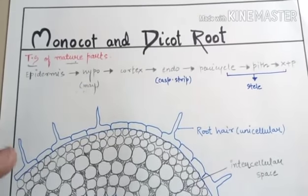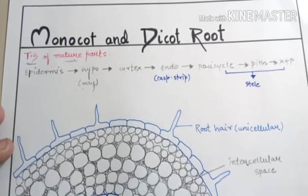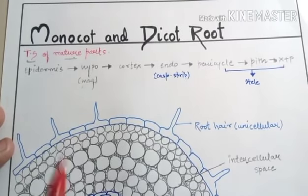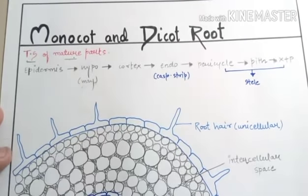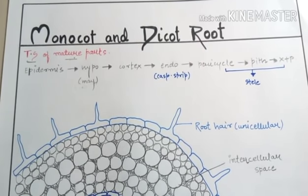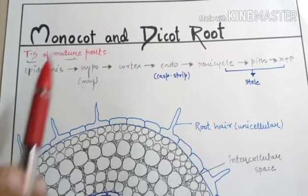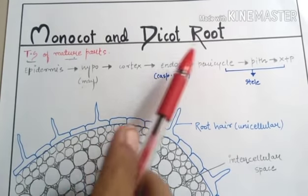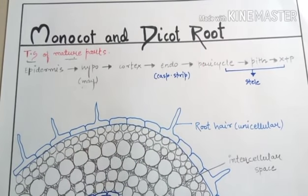Hello guys and welcome back to another video from Weapon Sharma Biology Tutorials. Today we are going to talk about the monocot and dicot root. We have already talked about different kinds of parts and different kinds of tissue systems in plants, and now it is time for the main topic: the differences between monocot and dicot plants on the basis of their root, stem, and leaves.